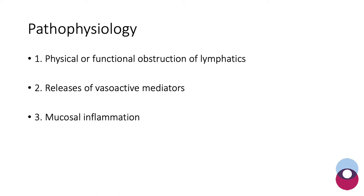A cause of PLE is either a physical or functional obstruction of lymphatics, which typically leads to an overflow and leakage of lymph. This is typically caused by congenital or acquired lymphatic diseases like lymphangitis or primary idiopathic versus secondary lymphangiectasia. Release of cellular mediators affecting vascular permeability can also cause fluid to egress into tissue or into the intestinal lumen, for example seen in eosinophilic gastroenteropathy. Mucosal inflammation, divided into erosive and non-erosive, will cause inflammation, damage to the tissues, and leakage of protein.